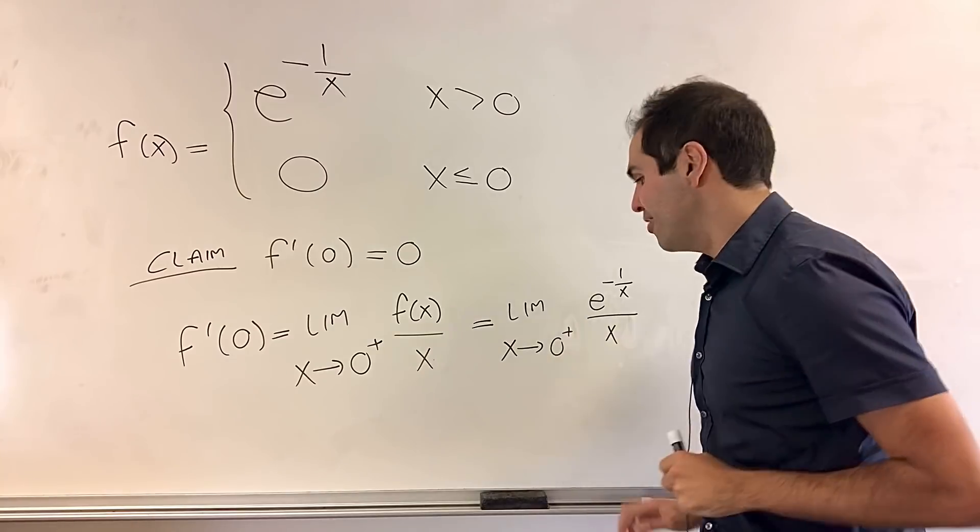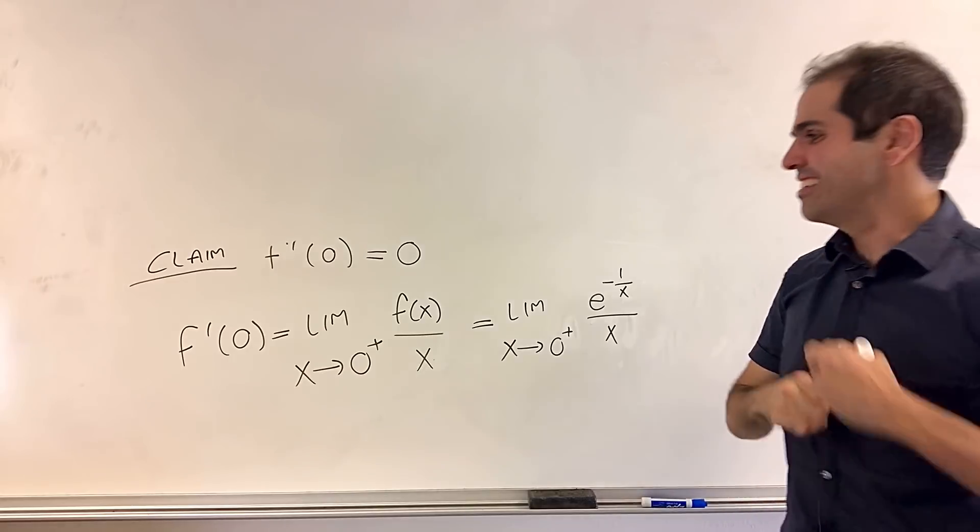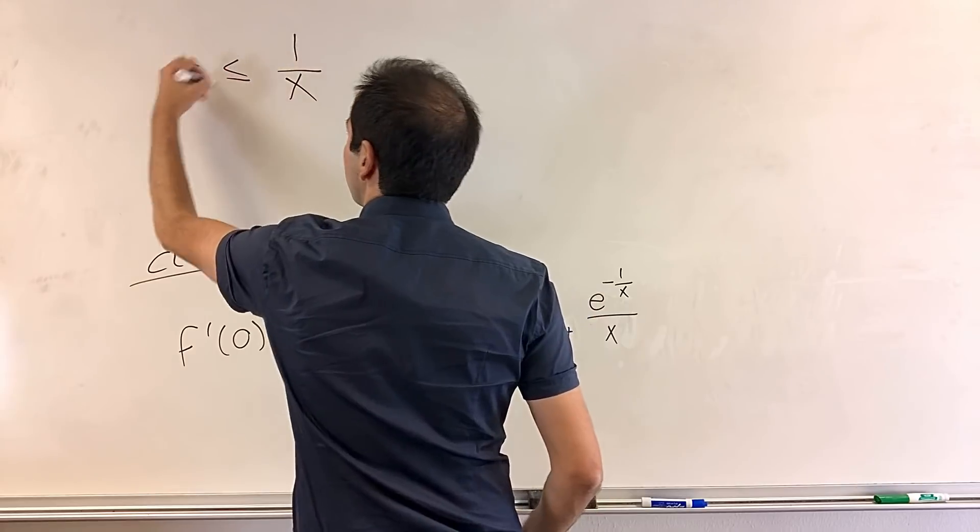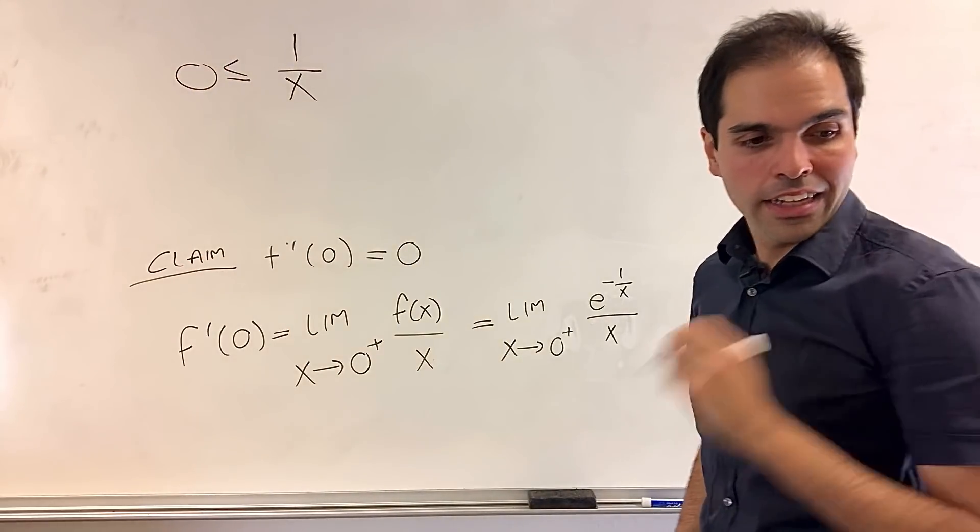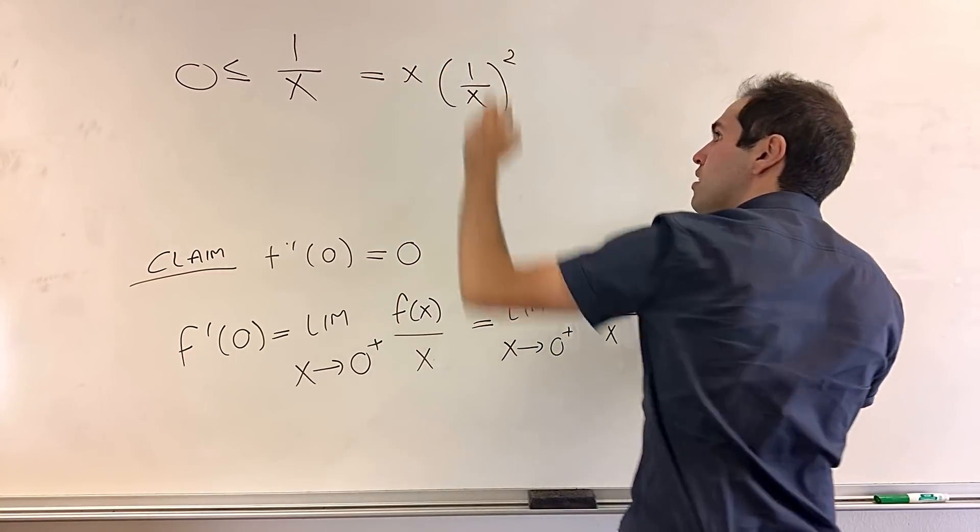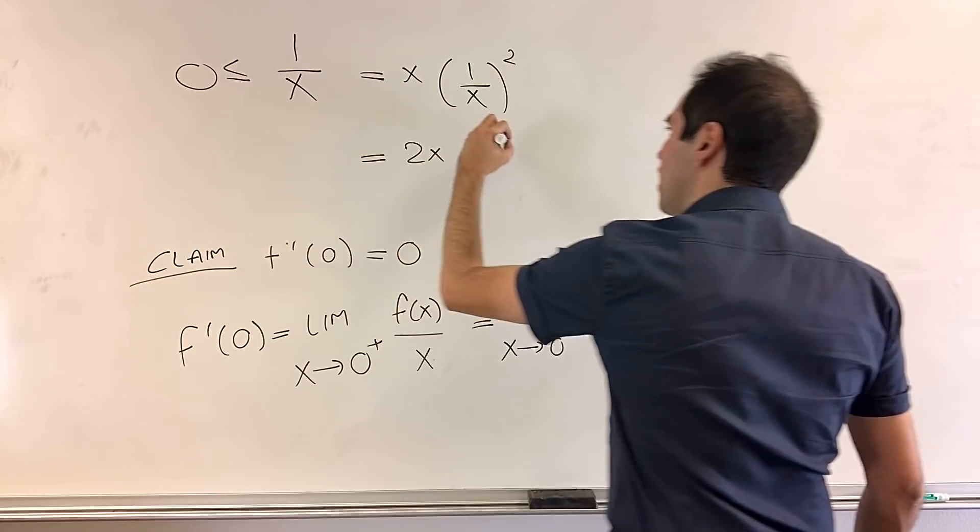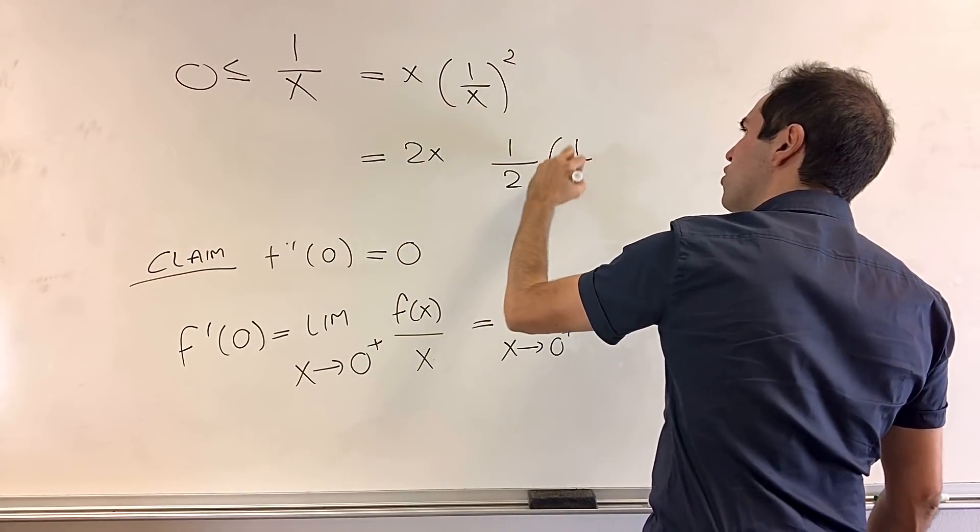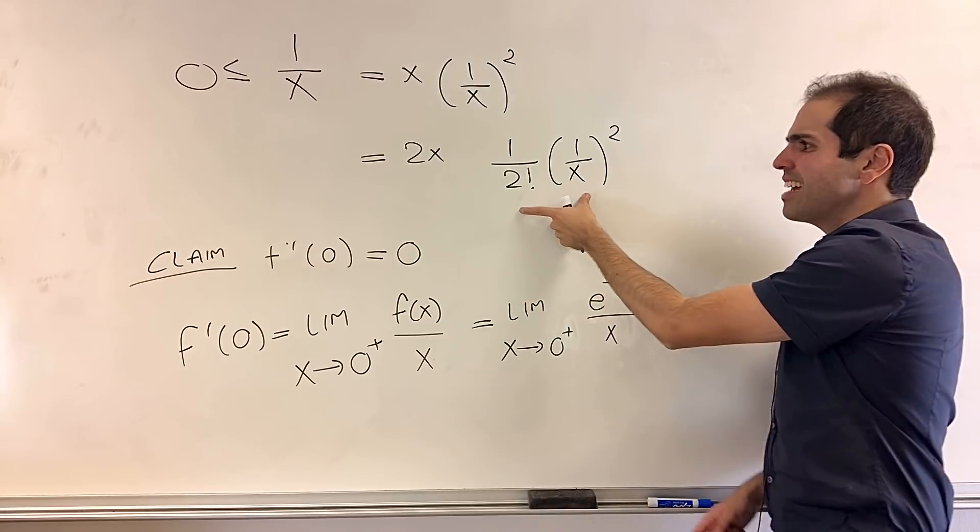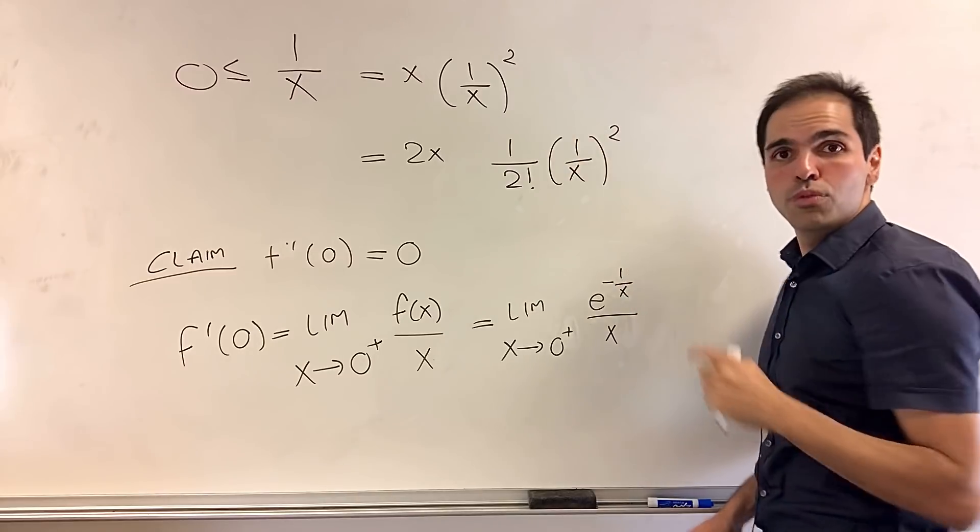Instead, notice the following cool trick. And I didn't know about this until I saw Wikipedia. It's quite nice. Because consider one over x. On the one hand, it is positive since x goes to zero plus. On the other hand, try to write this as x times one over x squared. And even better, let's try to write this as two x times one over two, one over x squared. But notice your two is two factorial.